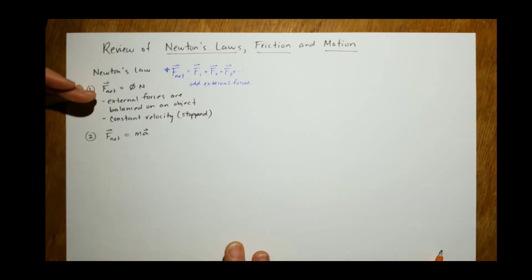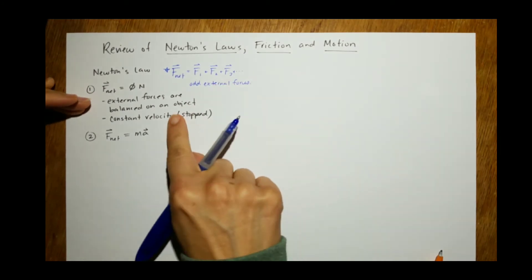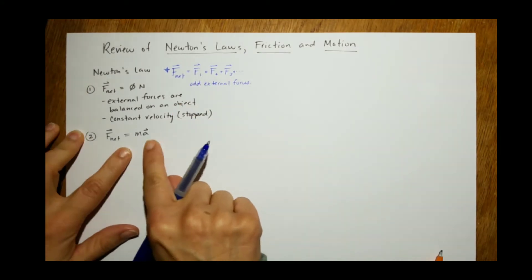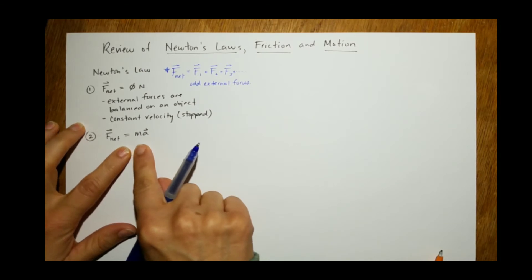So if these add up to be zero, it's moving at a constant velocity. If they don't add up to be zero, they equal mass times acceleration.